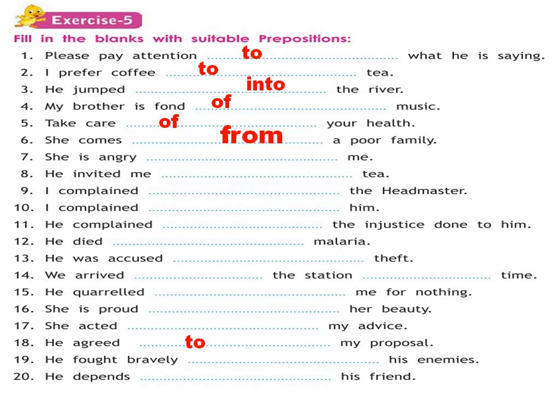She is angry with me — we use 'with' with angry. He invited somebody dash a party — we always invite someone 'to' a party. I complain dash the headmaster — 'to the headmaster'. I have complained dash him — 'about him'. When talking about to whom we have complained, we use 'to'; when talking about the person complained about, we use 'about'; and when talking about the issue, we use 'against'.